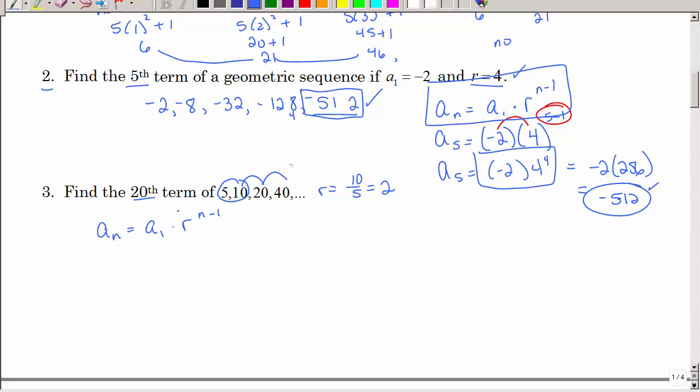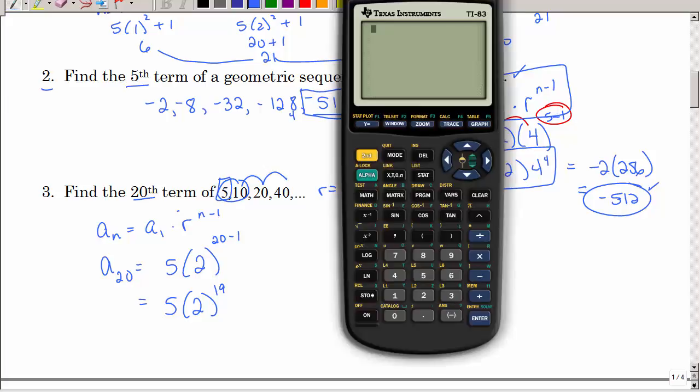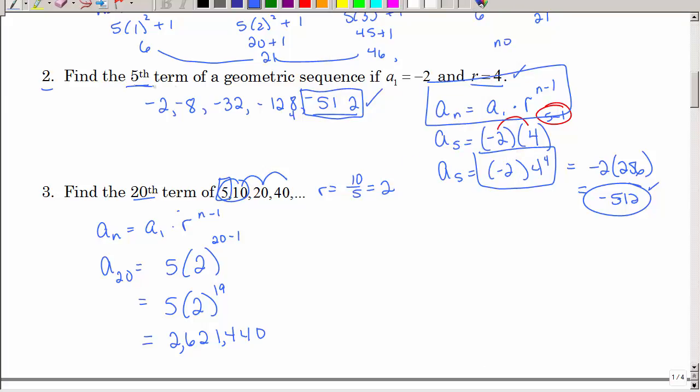Of course, I'm just multiplying by 2. And my first term is 5. So, I want the 20th term. So, I have 5 times r to the 20th minus 1. So, that's 5 times 2 to the 19th power. It's going to be a fairly large number. So, I have 5 times 2 raised to the 19th power. 2,621,440. So, again, you could list it out like on number 2. But let's see if we can use that formula like we did on number 3.